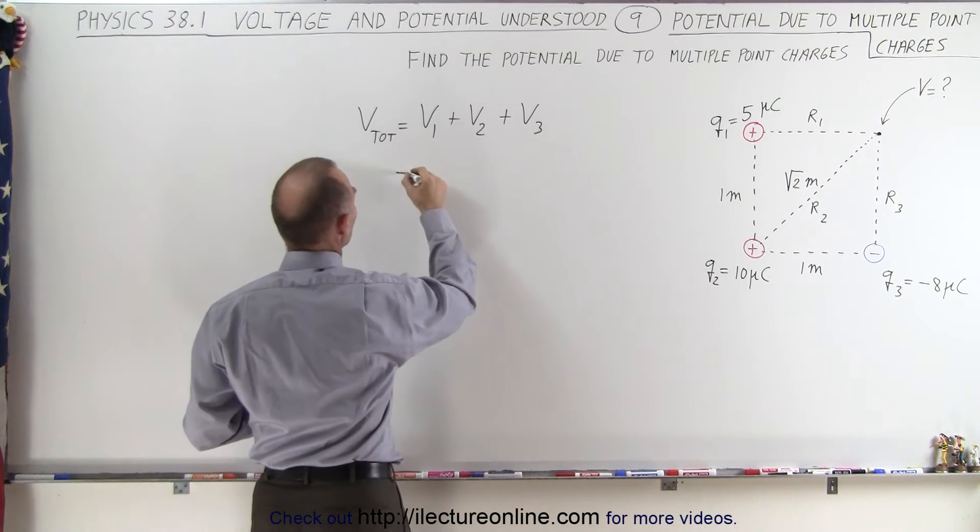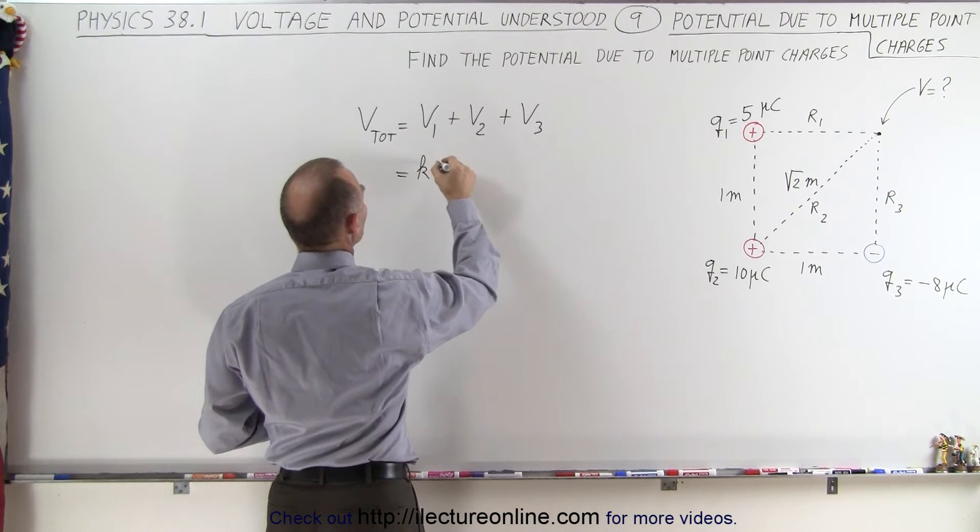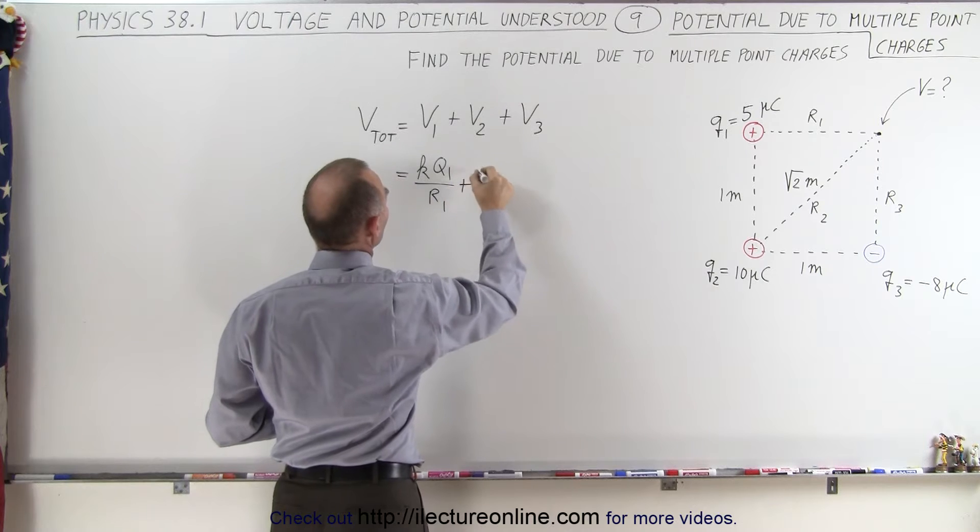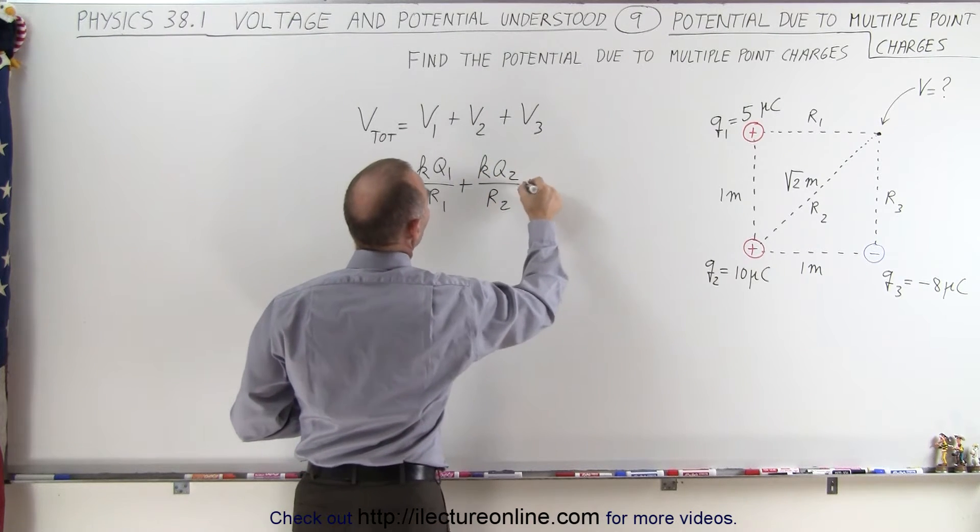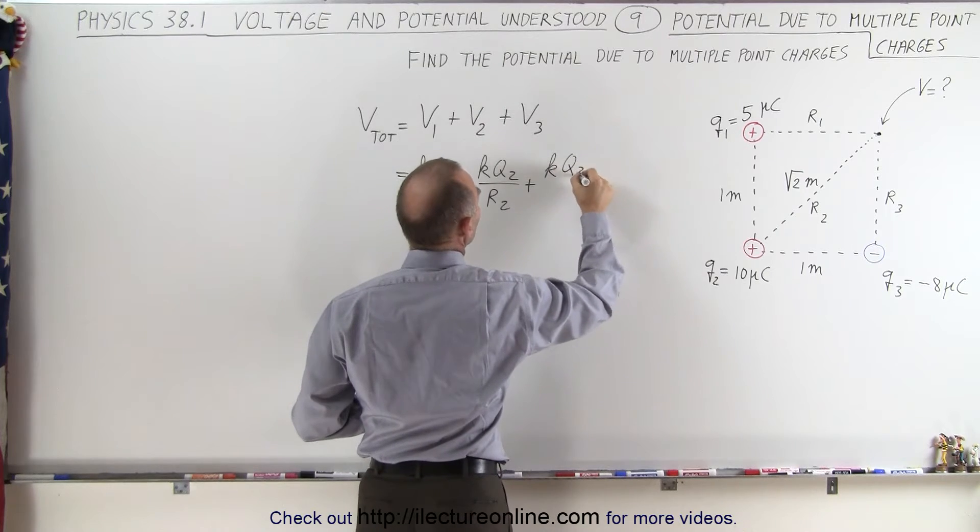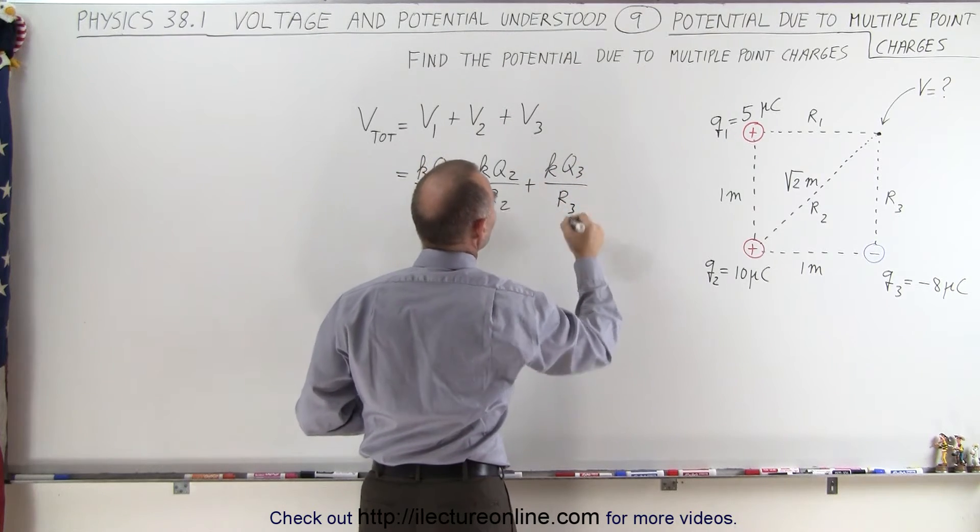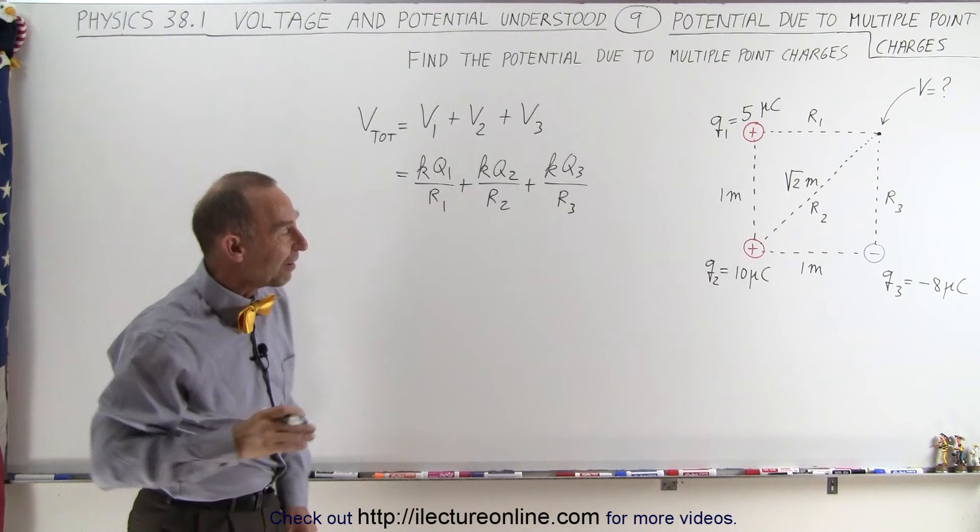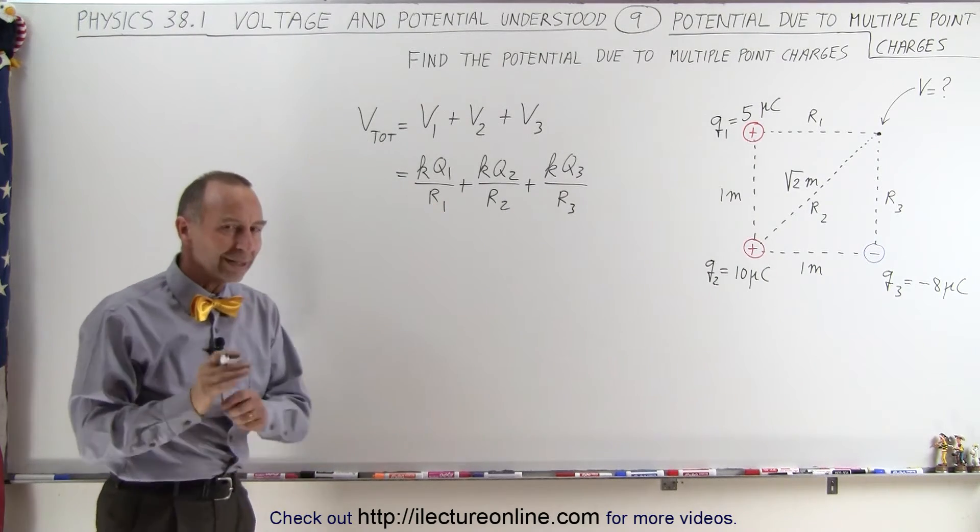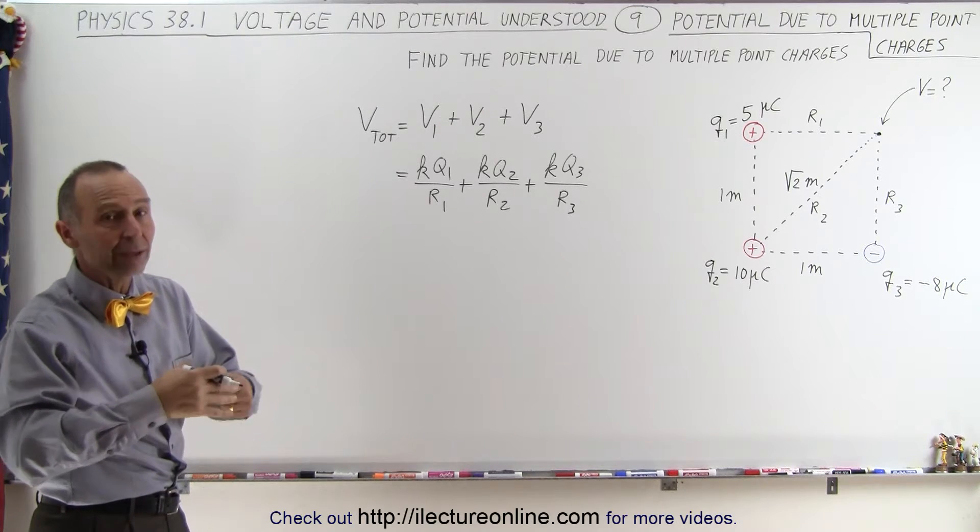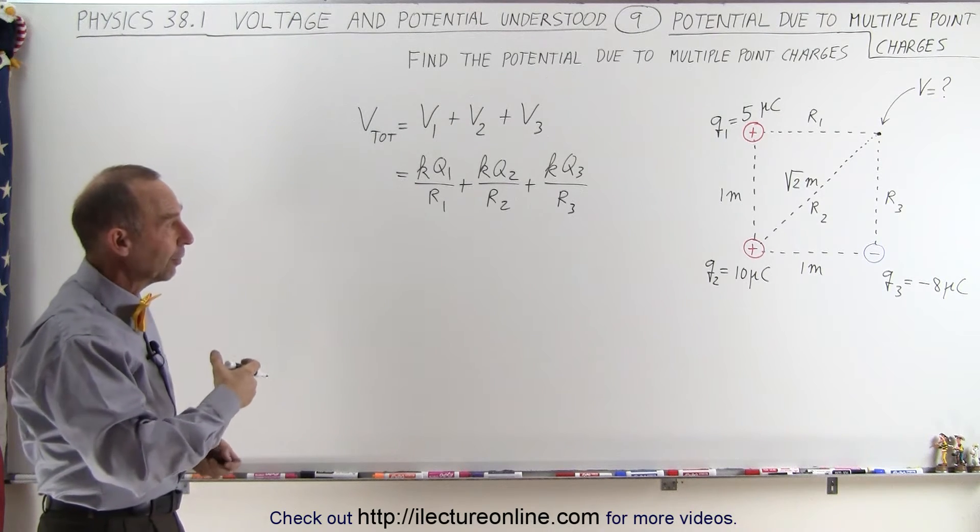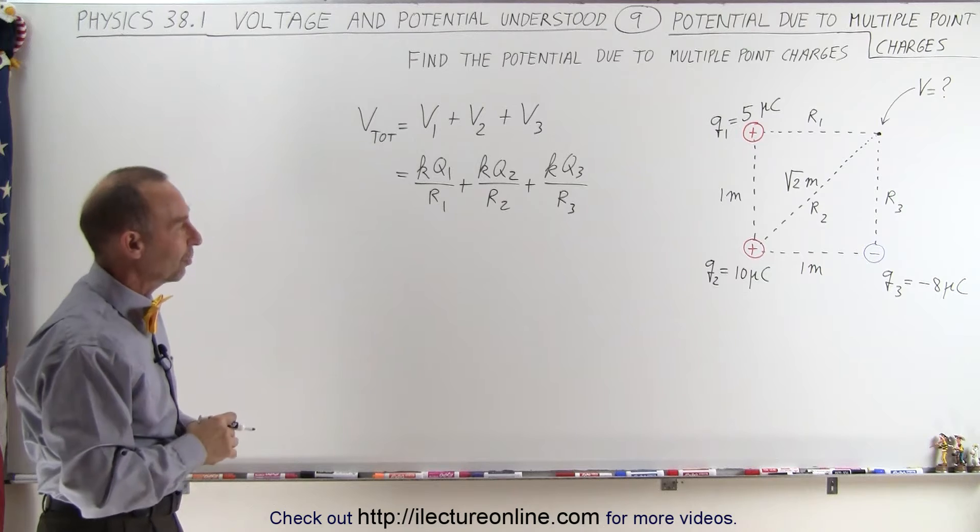So in this case, this is going to be equal to K times Q1 divided by R1 plus KQ2 divided by R2 plus KQ3 divided by R3. Now normally, you would factor out a K to make things a little bit easier, but I'm going to leave K in there for each of the terms so you can see in the end how you just add up the voltages that are caused by each of the charges individually.